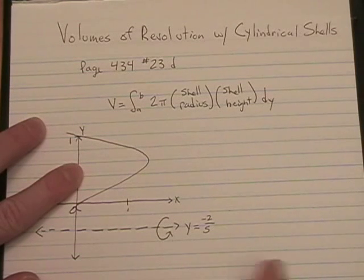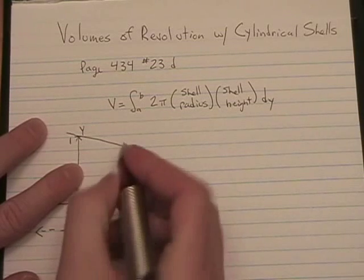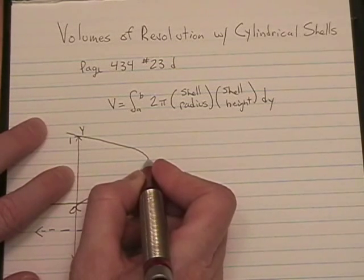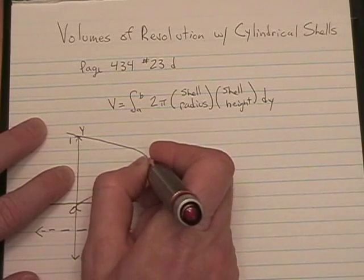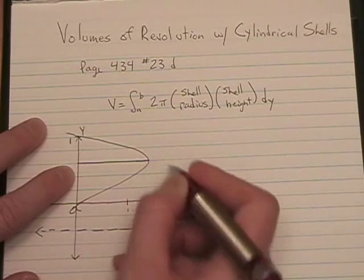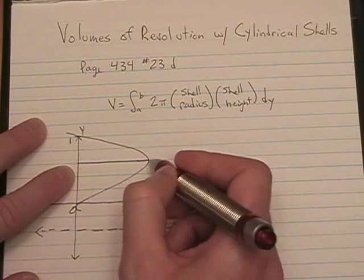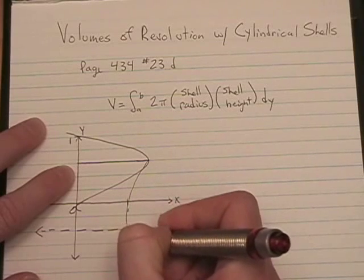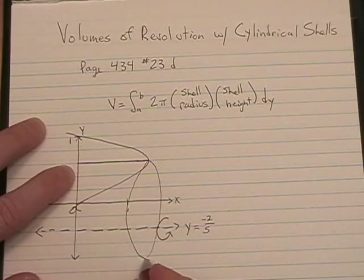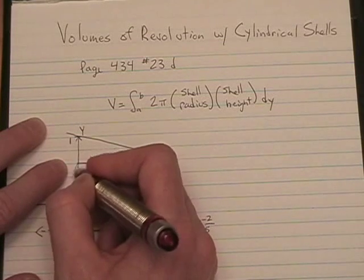Well, we create our typical shell by taking a slice, a horizontal slice, parallel to the axis of revolution, and spinning it all the way around to make a cylinder. So, I'll kind of try and show that, without messing my picture up too much.